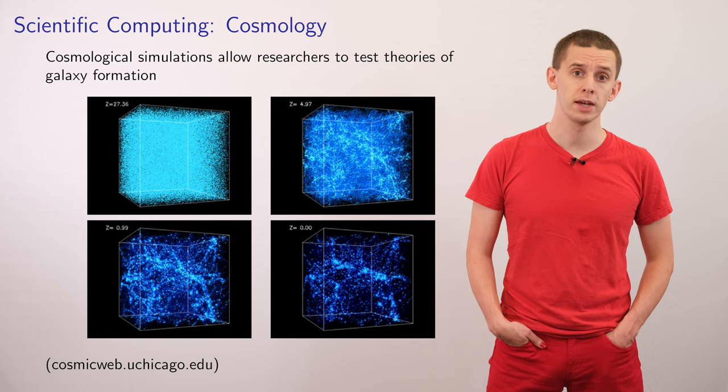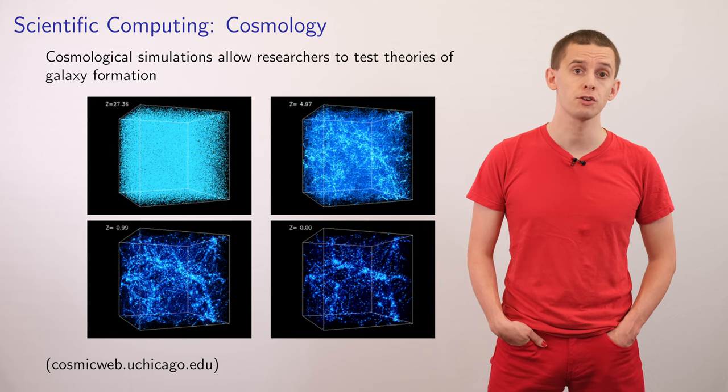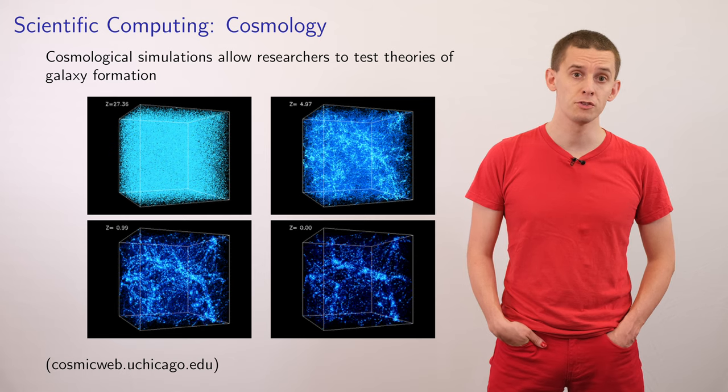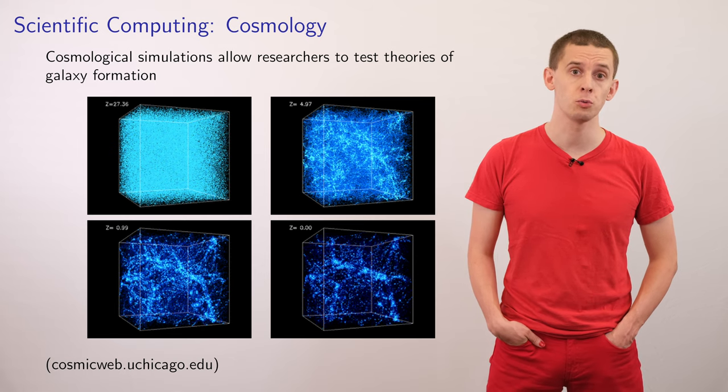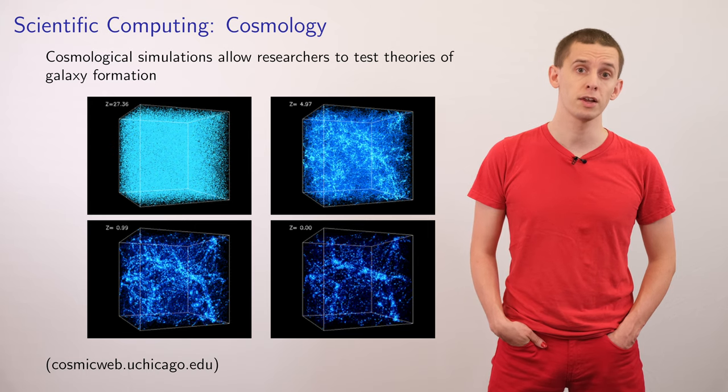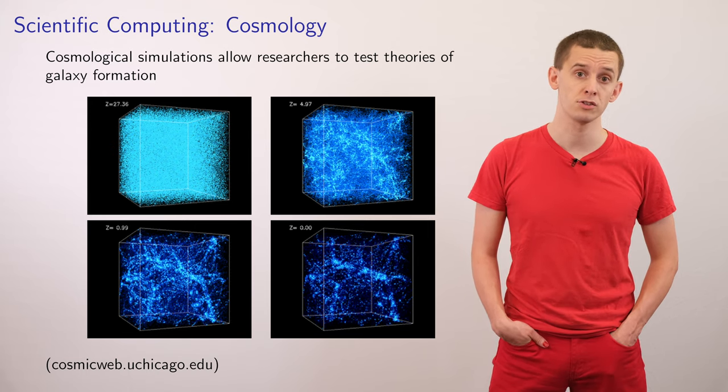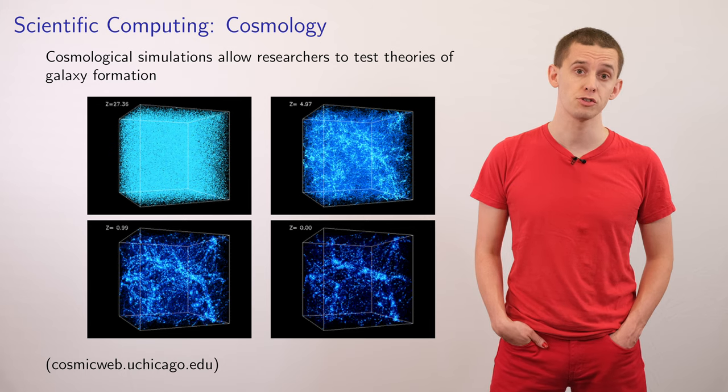Scientific computing enters into a huge range of fields, and I just want to illustrate some of them here. For example, in the field of cosmology, we can use scientific computing as a way to look at large-scale structure in the universe. In the simulation shown here, we're able to look at gravitational interactions that lead to galaxy formation.